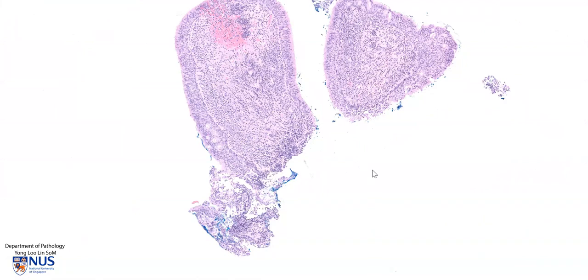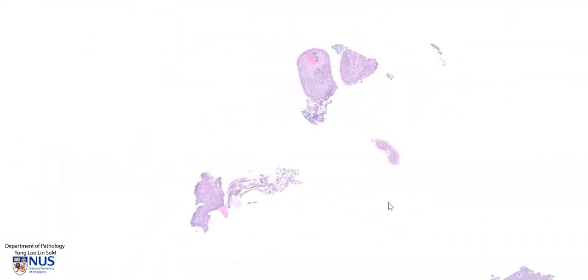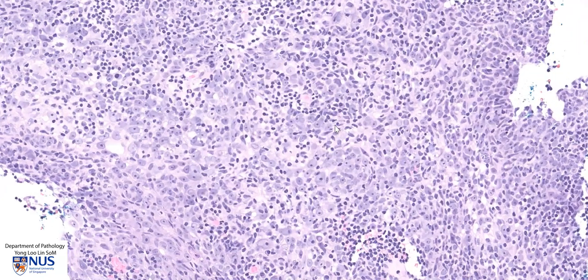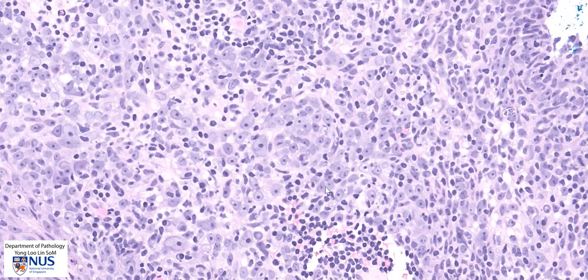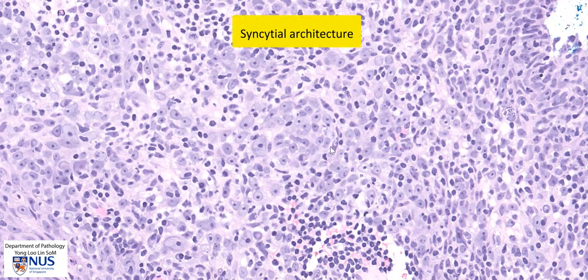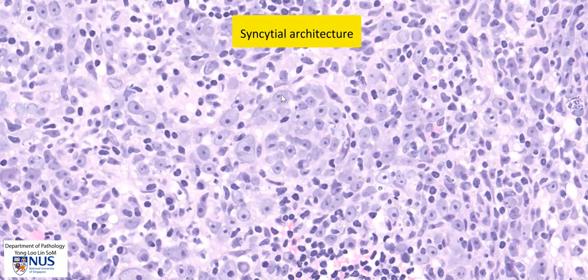Let's look at some of the other pieces which show the malignant cells. Zooming into this area, we can see that there are a lot of very abnormal cells with large nuclei pretty much over this whole area. This type of architecture we call syncytial because the cytoplasm is quite ill-defined, and the cells tend to blend into the cytoplasm of the neighboring cells.